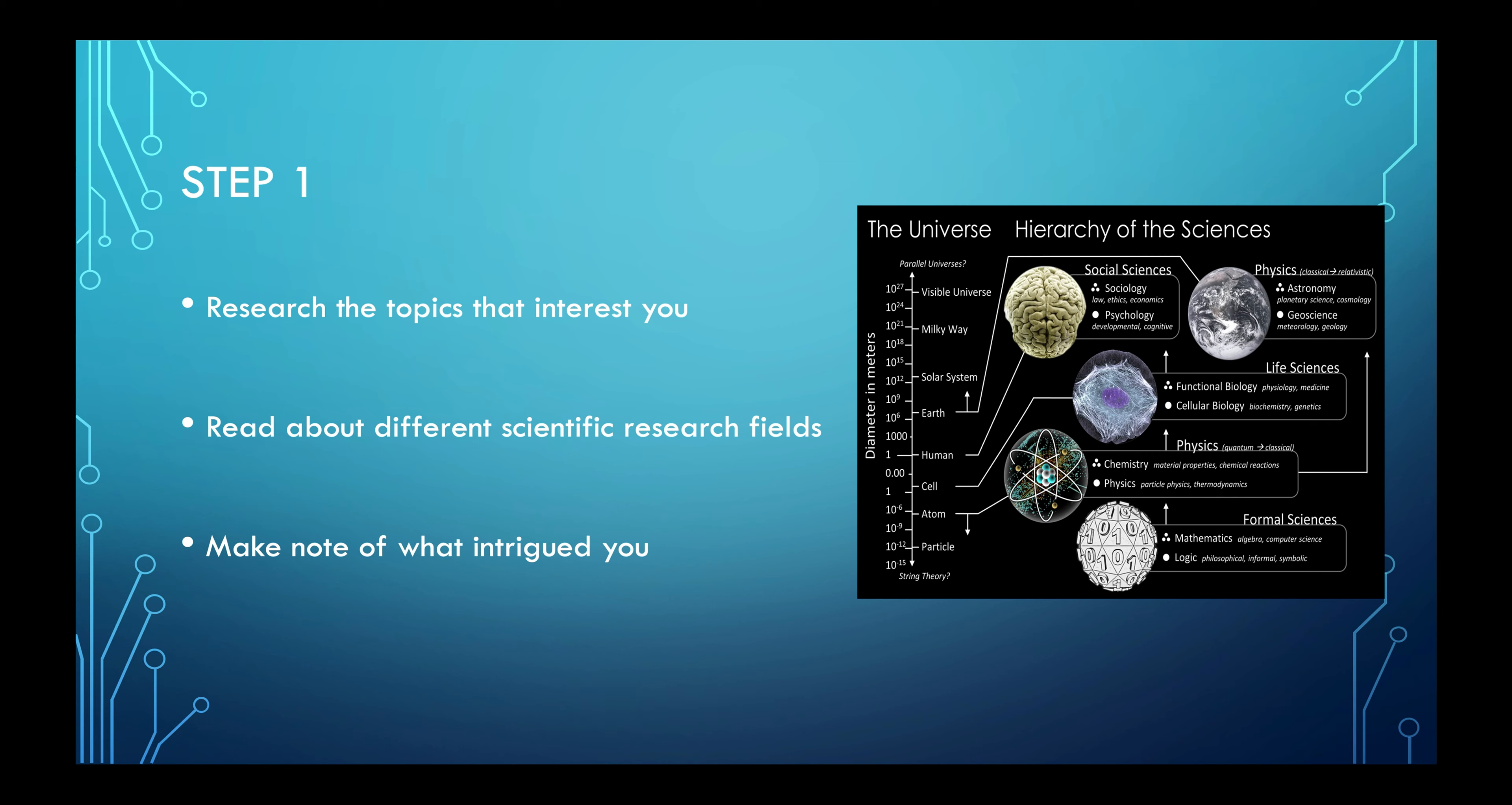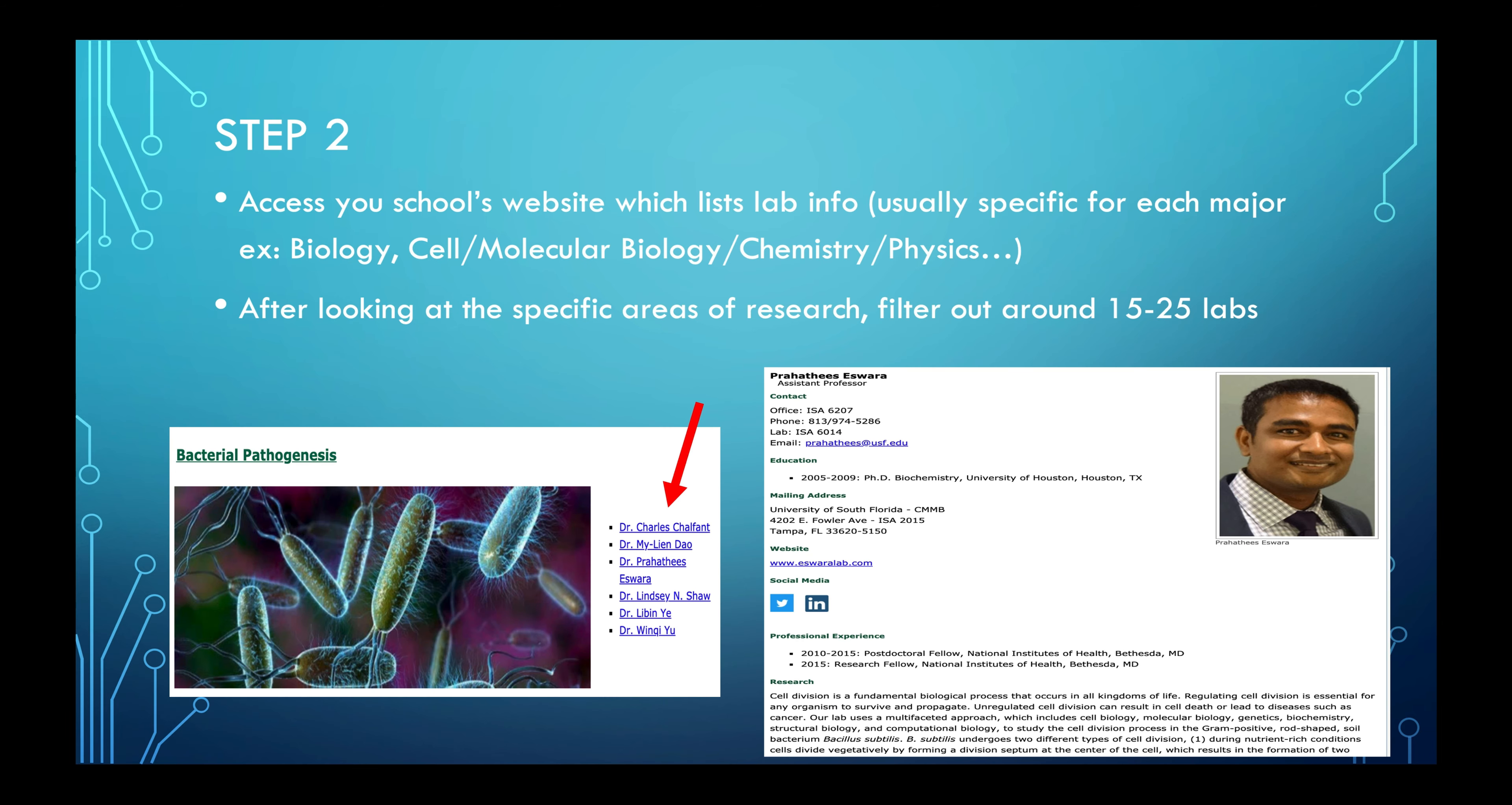Moving on to Step 2. After you've completed the research process, you now have to access your school's website or lab website which includes all of the professors at your university or near you who are currently conducting any type of research. The research areas might be related to pathology, biostatistics, chemical processes, disease prevention, and many other interesting fields. After looking through all of the various specialties, you should now filter out around 15 to 25 different labs that you are interested in working with.